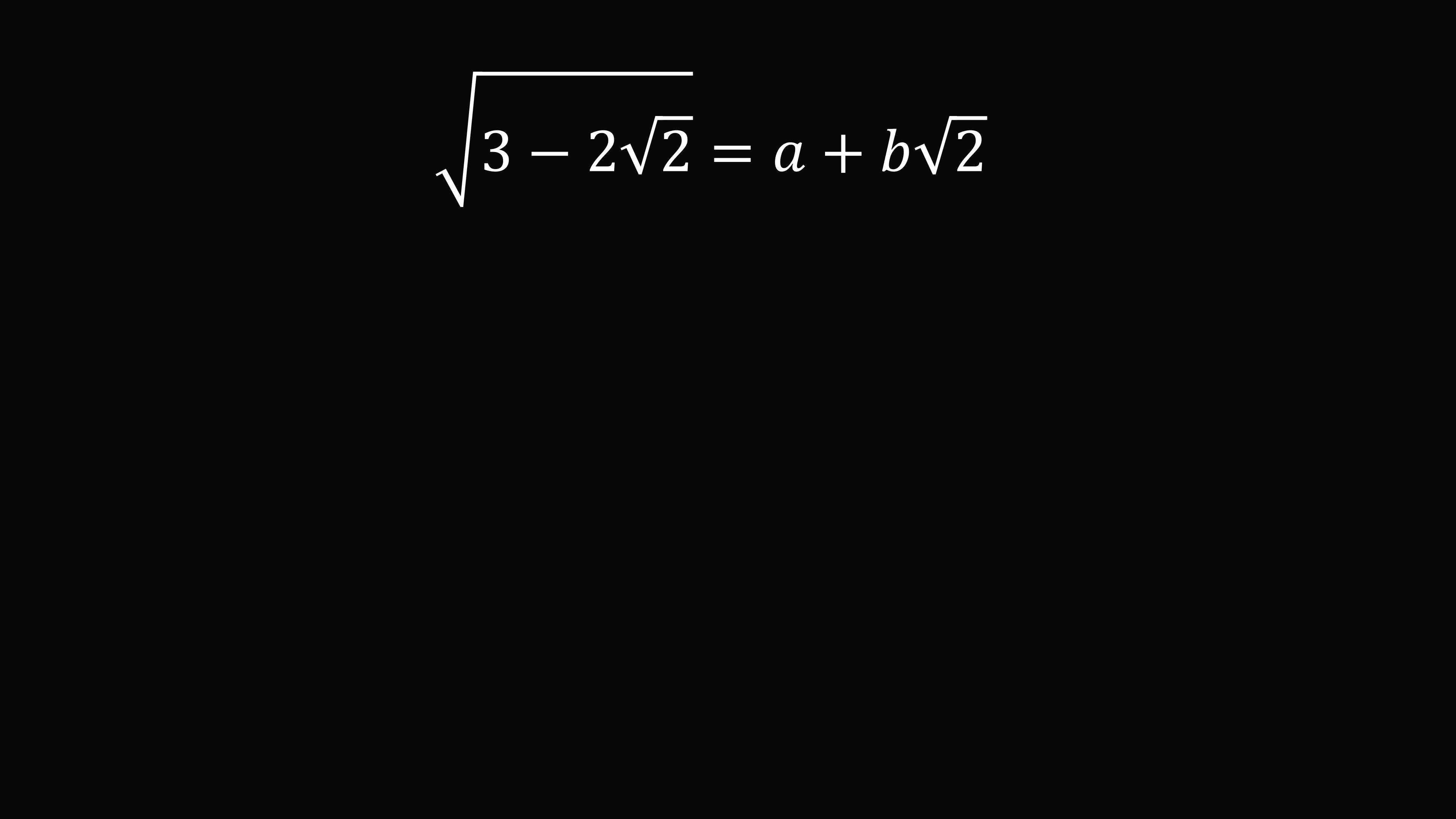We will set the square root of the quantity 3 minus 2 root 2 to be equal to a plus b root 2. Squaring both sides of the equation, we get 3 minus 2 root 2 is equal to the square of a plus b root 2. We square the binomial to get a squared plus 2b squared plus 2ab square root of 2.